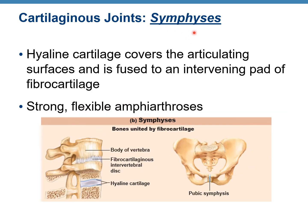In a symphysis, which is also a cartilaginous joint, we have a different cartilage — fibrocartilage. Bones are united by fibrocartilage, though it may have a little hyaline cartilage as well, like the intervertebral disc. Examples are the intervertebral joints and the pubic symphysis. These are strong, flexible amphiarthroses — slightly movable.